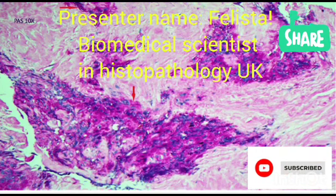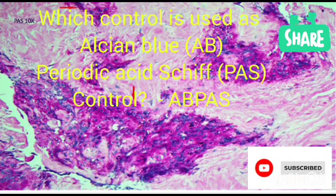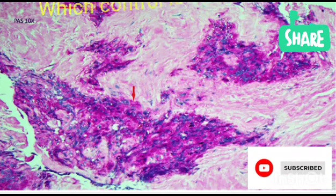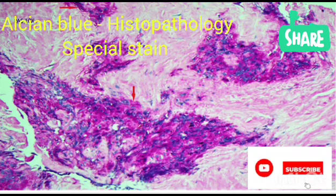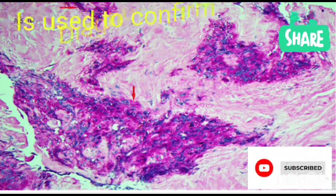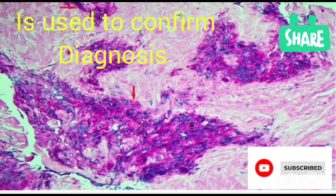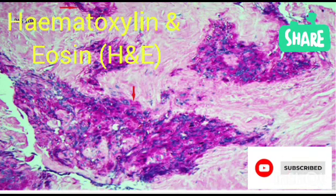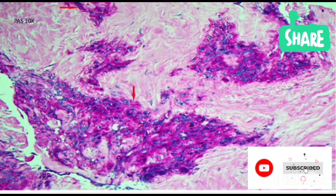What control is used for ABPAS? ABPAS is known as Alcian Blue Periodic Acid Schiff. Alcian Blue — these are special stains we do in histology to confirm diagnosis. Most times after we've done the basic stain, the H&E, and the result suggests something like fungi, we go further to do some special staining.